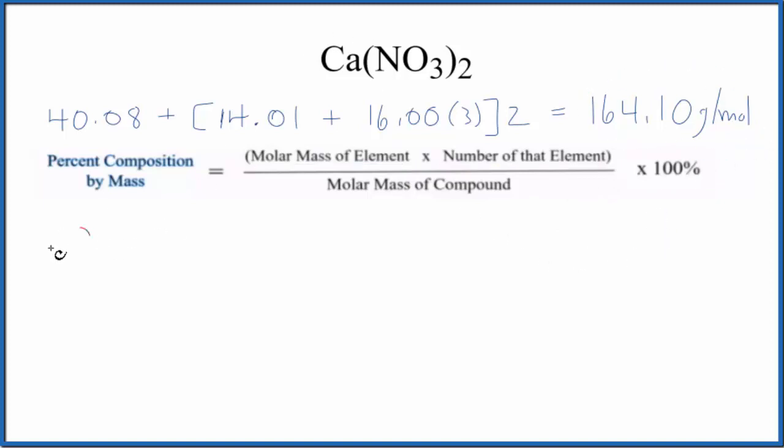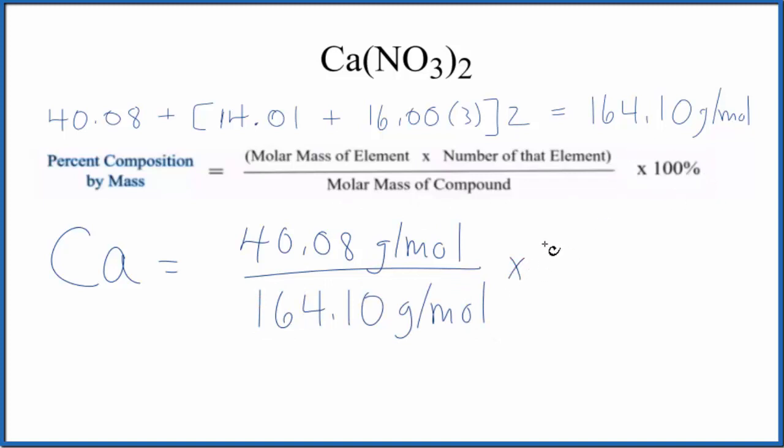Let's do that for calcium. On the periodic table, calcium is 40.08 grams per mole. We only have one calcium atom, so we divide that by the molar mass of the compound, then multiply by 100 to get a percent.